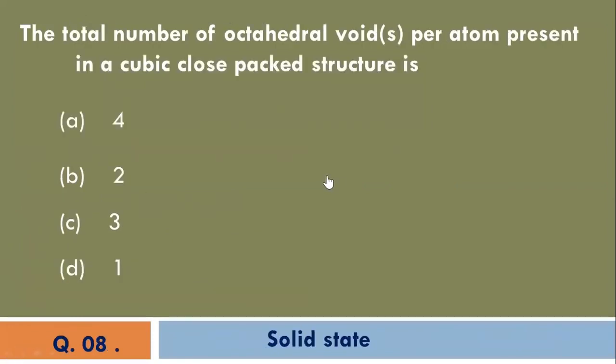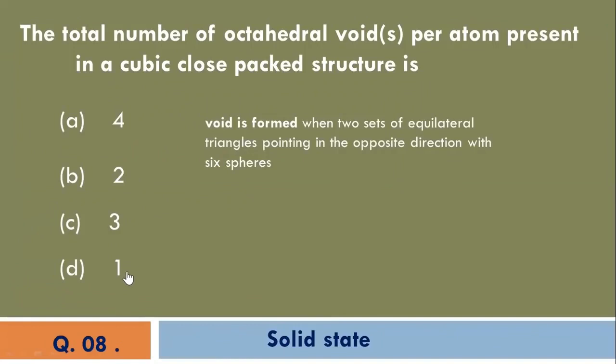The total number of octahedral voids per atom present in cubic close-packed structure is 4, 2, 3, 1. Correct answer is D, 1.